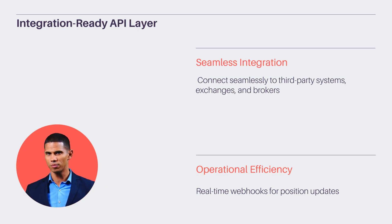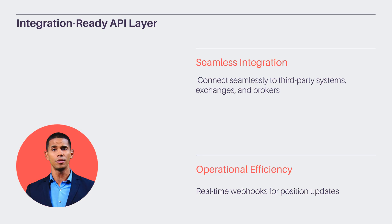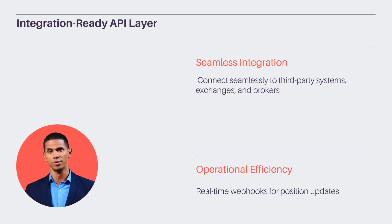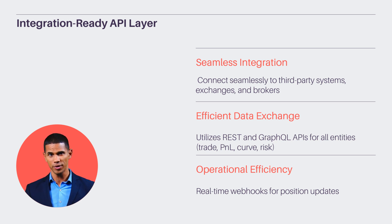The integration-ready API layer in Gravitas ETRM connects seamlessly to third-party systems, utilizing REST and GraphQL APIs for efficient data exchange. Real-time webhooks and outbound connectors enhance connectivity, ensuring smooth operations across platforms. This robust integration capability supports diverse systems, facilitating comprehensive data management and operational efficiency.